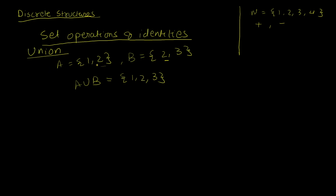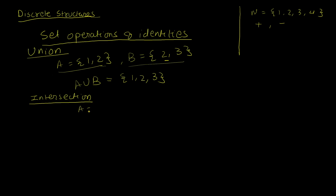You could apply the same idea to any number of sets. The next concept is intersection. Intersection is a new set formed by taking only the common elements. Considering the same sets A and B, the intersection of A and B would just be the set containing the element 2.